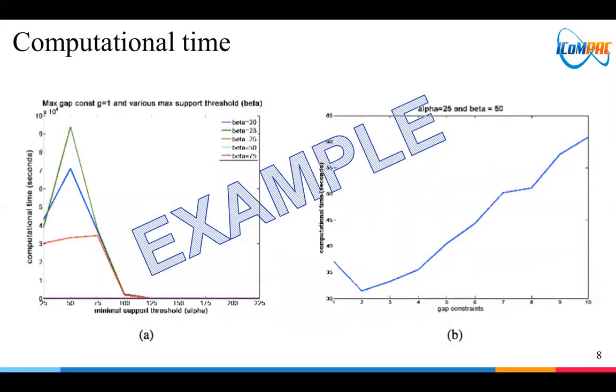Here is the computational time. As alpha value is getting bigger, then the number of patterns will be smaller. Meaning, the execution time is faster since alpha is a parameter to control the frequent pattern.